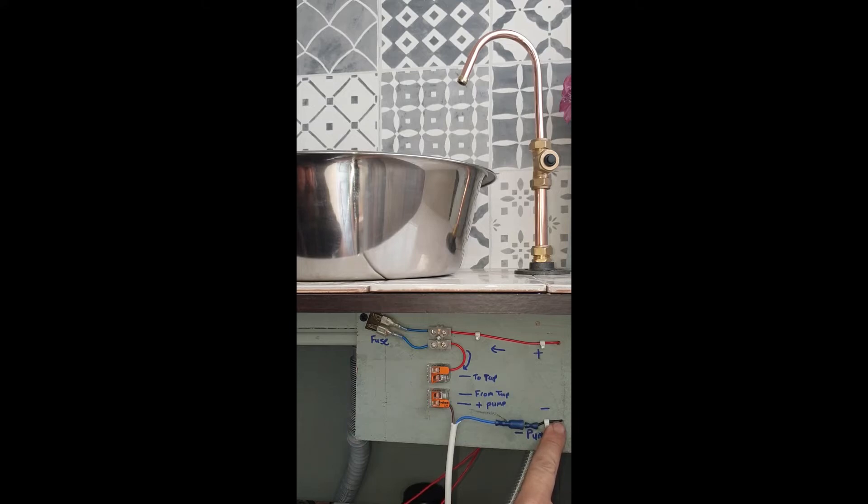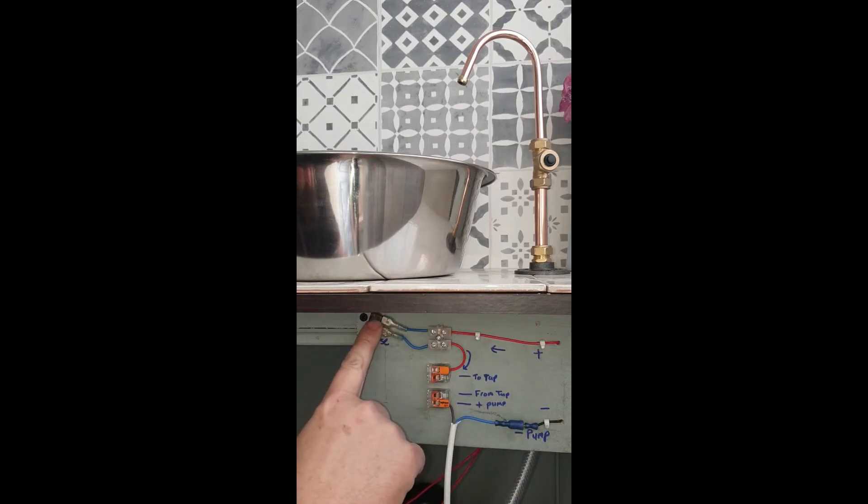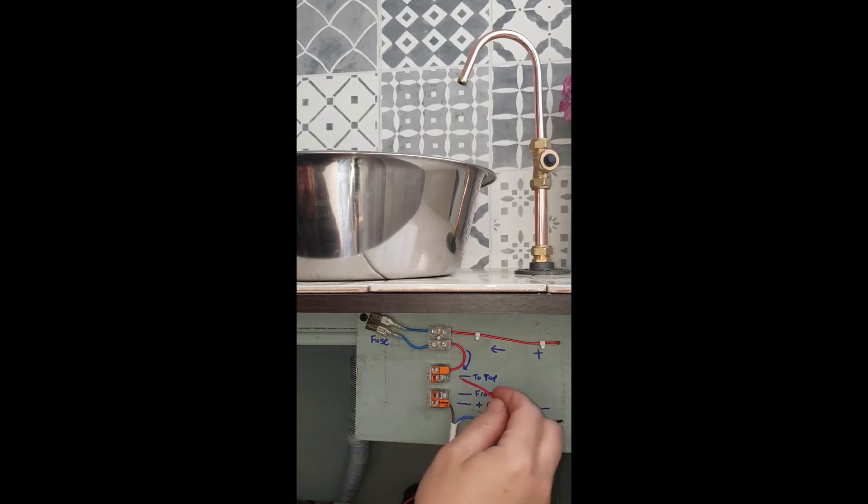Go to a fuse, from fuse to some sort of connector where you will connect one of your feeds from your tap. The second connector you will put your second feed from your tap.